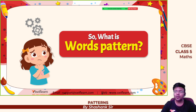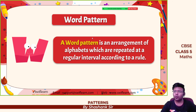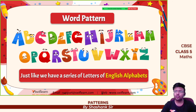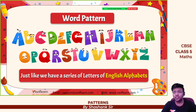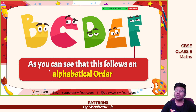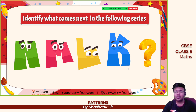What are word patterns? A word pattern is an arrangement of alphabets which are repeated at regular intervals according to a rule. Just like we have a series of letters in the English alphabet. Let's take a few examples. Identify what comes next in the series: B, C, D, E — and F will come, as it follows alphabetical order.